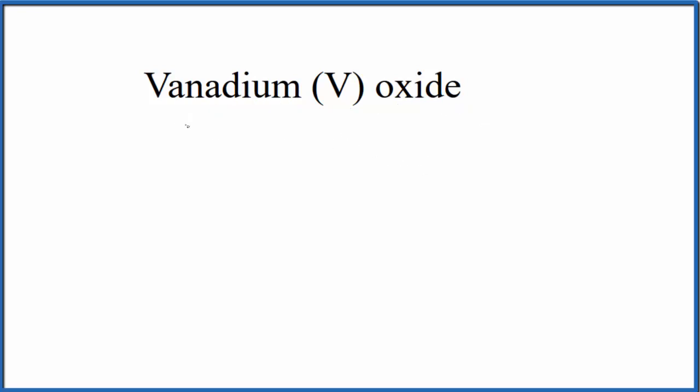So the first thing we'll do is write the element symbol here for vanadium. That's V, which is a little bit confusing because we have this V here, but this is the Roman numeral V in parentheses.